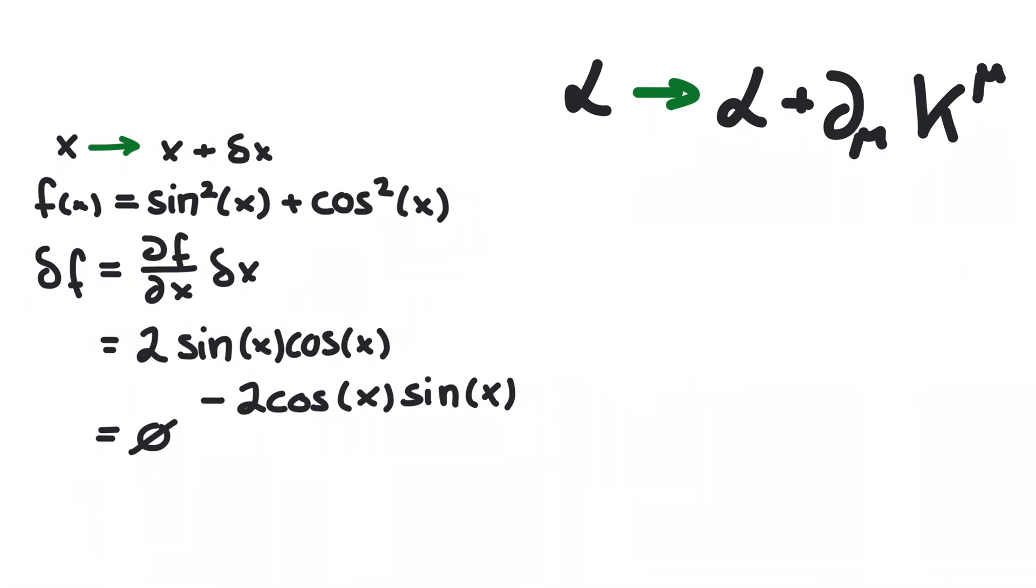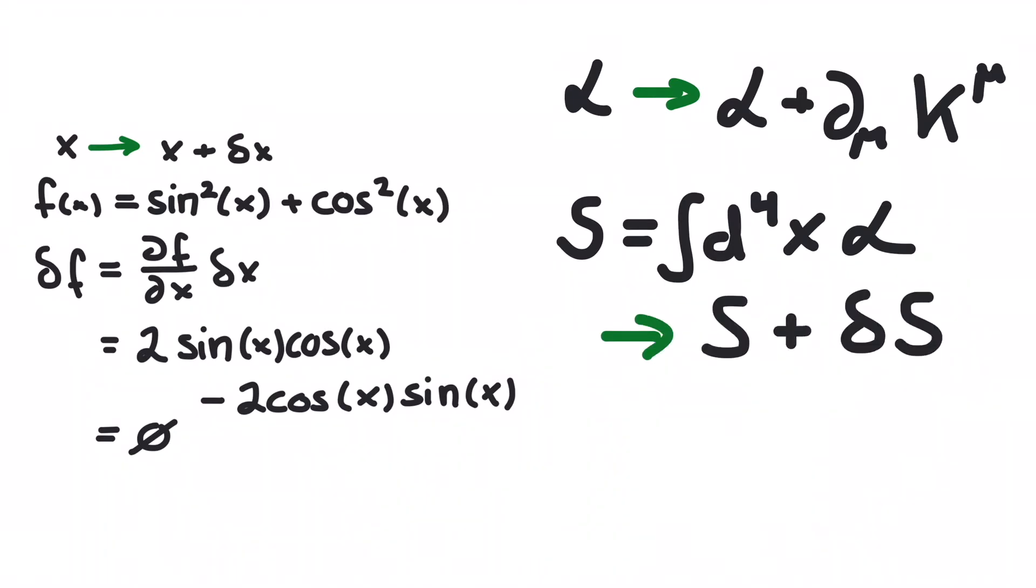This is equivalent to saying that the Lagrangian is altered by at most a total derivative. So, on the fundamental level when computing the action as an integral over the Lagrangian, the action remains unchanged. This is because the integral over the total derivative is the same as the function evaluated at the boundaries, which in this case must yield zero.